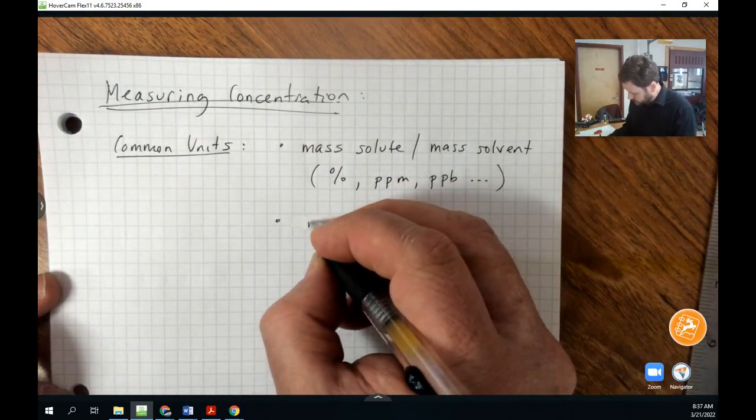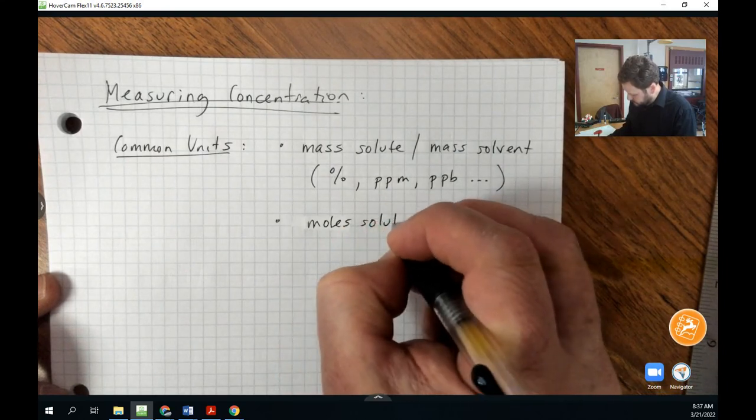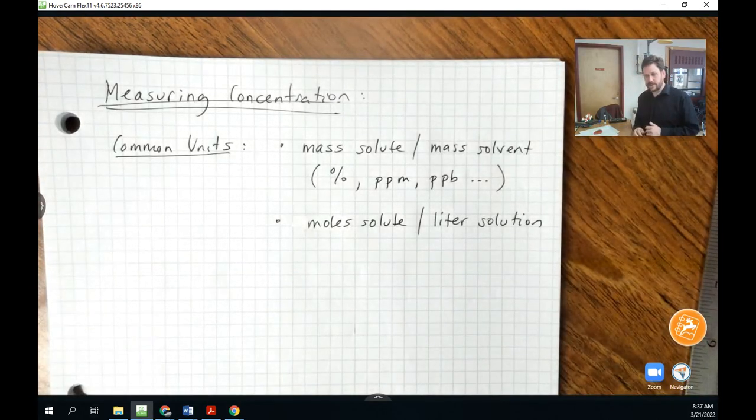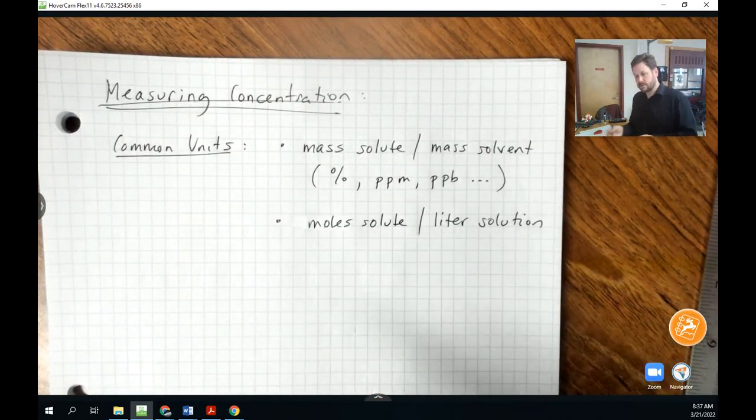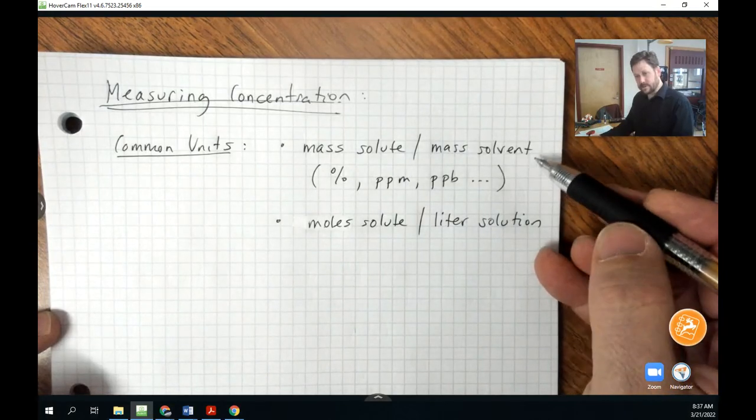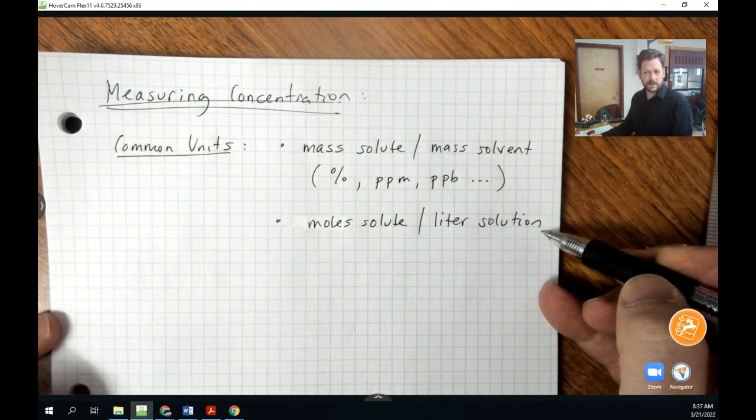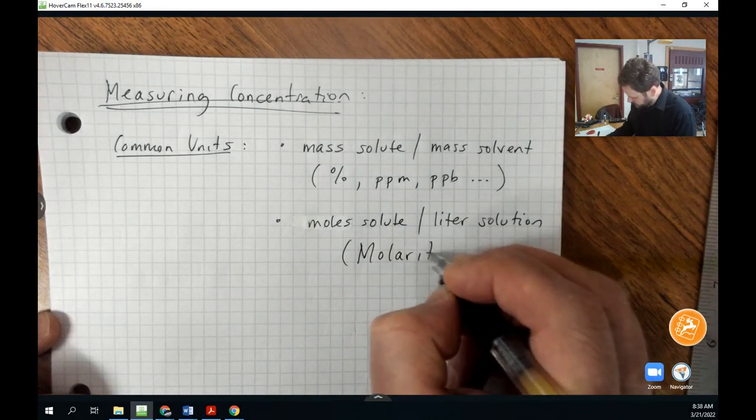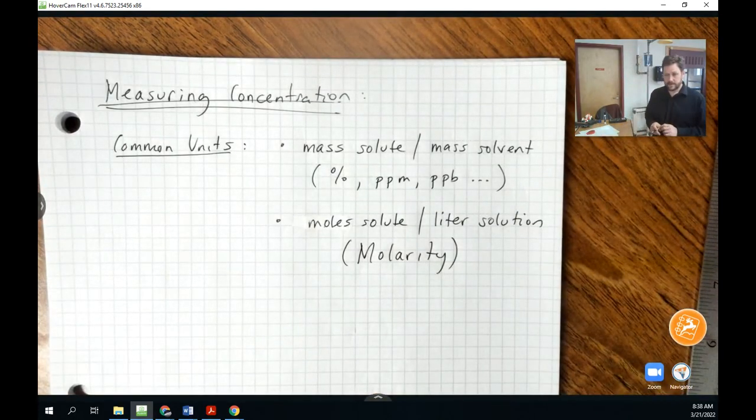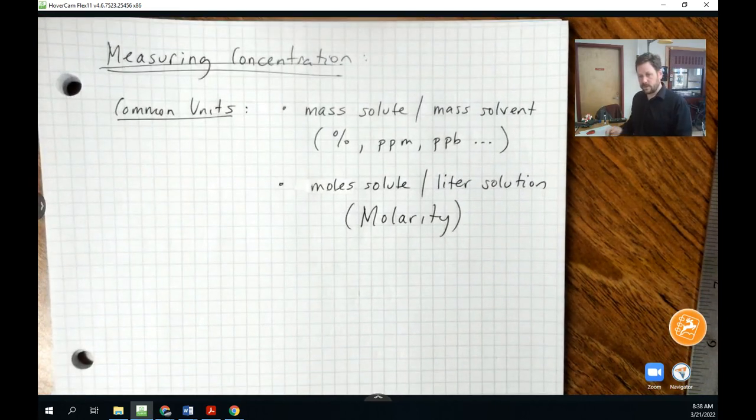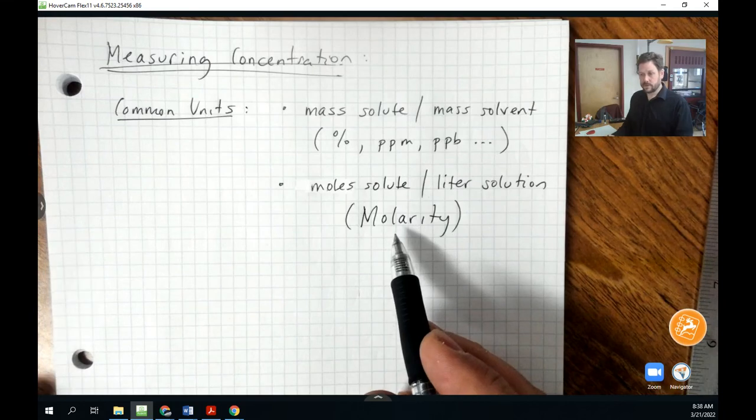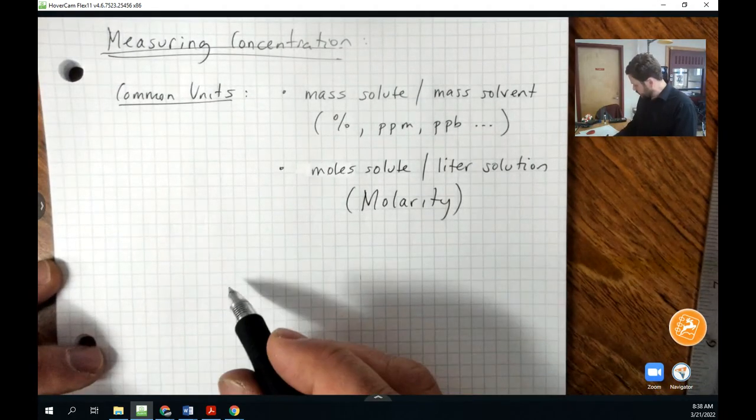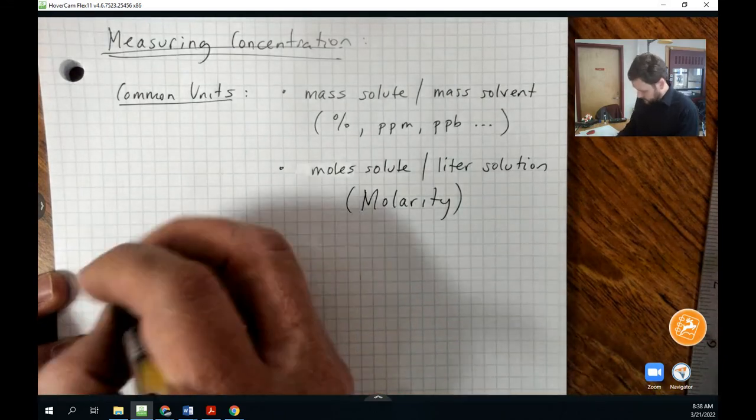The units we're going to use involve moles of solute per liter of solution. And notice that's different because that's not mass to mass, that's moles to volume. And this is another difference. Here we're talking about solvent and here we're talking about solution. And that's a subtle difference. Those two quantities won't always be the same. This is called molarity. Molarity is moles of solute per liter of solution. And this is the only way that we're going to be talking about concentration in this class. Very occasionally, we might need to deal with percent if we're analyzing a commercial product. But typically, we're going to be using molarity.